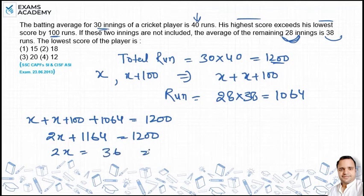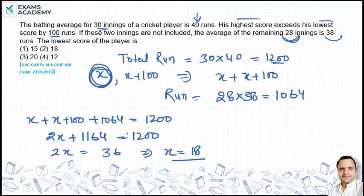Solving, 2x equals 36, so x equals 18 runs. x was the lowest score, which means the player's lowest run is 18. So option 2 is the correct answer for this question.